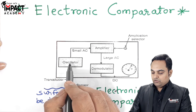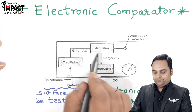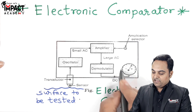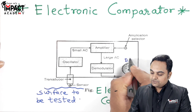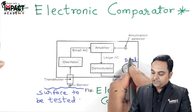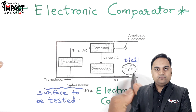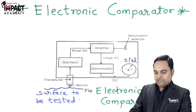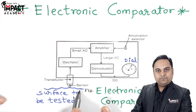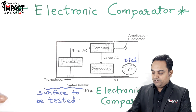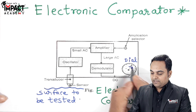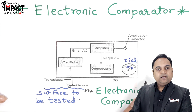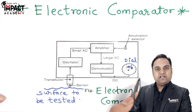After that, we have an amplifier, and then there is a demodulator, and finally we have a dial on which the reading is indicated — or we can say there is the movement of this pointer. Basically, if the surface is rough, then this pointer would be deflected. It can either move towards the positive or the negative side; it can move in clockwise or anticlockwise direction.